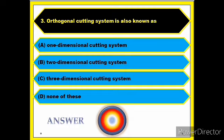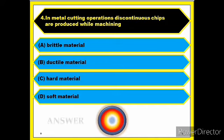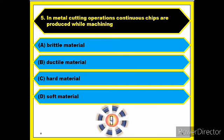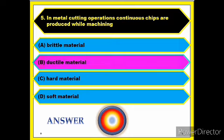Question number four: in metal cutting operations, discontinuous chips are produced while machining. Answer: discontinuous chips mean brittle material. Question number five: in metal cutting operations, continuous chips are produced while machining. Answer: continuous chips mean ductile material.